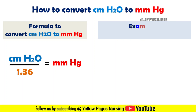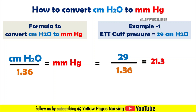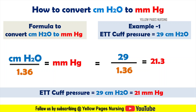First example: endotracheal tube cuff pressure equals 29 centimeter H2O. To convert to mmHg, we calculate 29 divided by 1.36, which gives 21.3 mmHg. So the ETT cuff pressure of 29 centimeter H2O equals 21 mmHg.